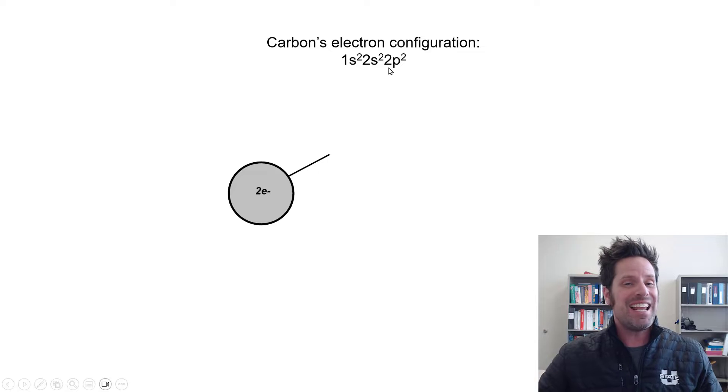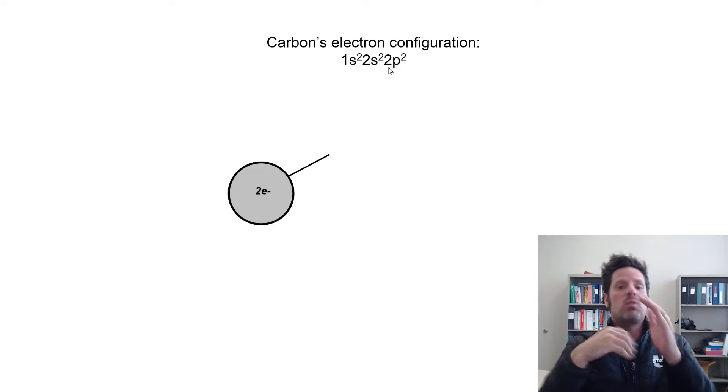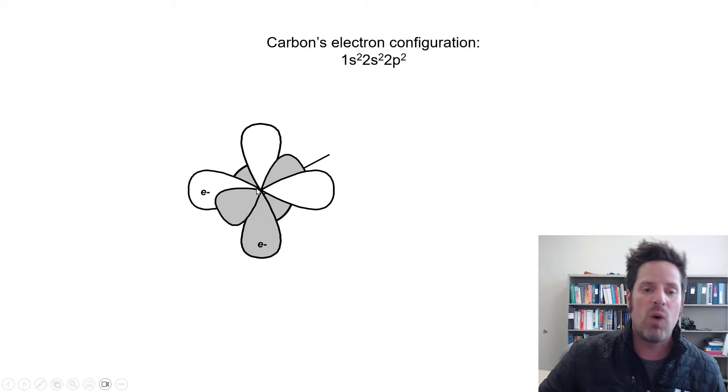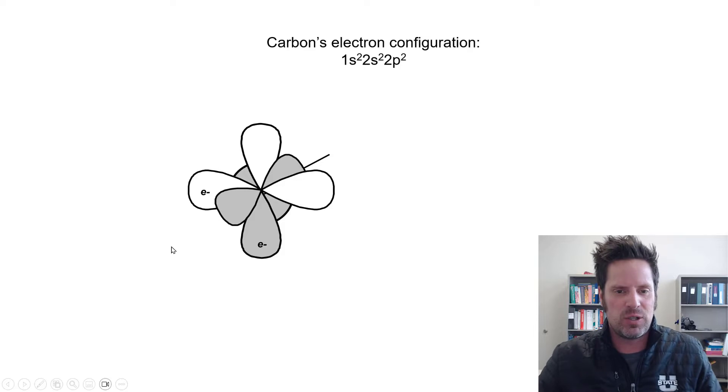We also have three individual 2p orbitals, one traversing the x-axis, one the y-axis, and one the z-axis, all 90 degrees apart from each other. They in toto contain two electrons, which I'll just arbitrarily put one in my pz orbital and one in my px orbital. My py orbital doesn't get any electrons.